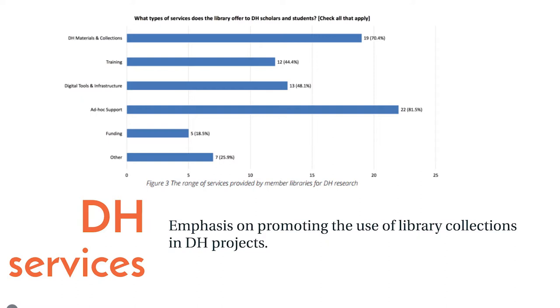Looking in more detail at the services provided by the library to digital humanities scholars, the two main areas were ad hoc support and DH materials and collections. Through analyzing the data, we saw an emphasis on promoting the use of library collections in DH projects.